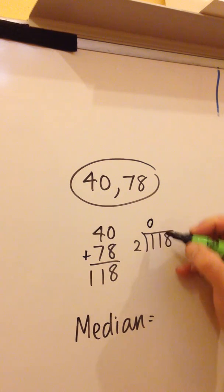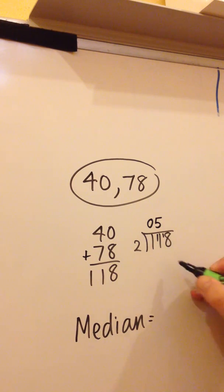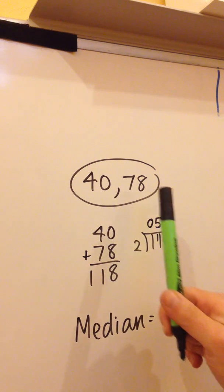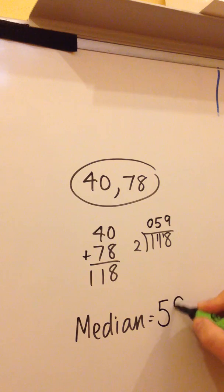2s into 1 goes nothing at all, remainder 1. 2s into 11 goes 5, remainder 1. 2s into 18 would give you 9. So here the median of these two central values will be 59.